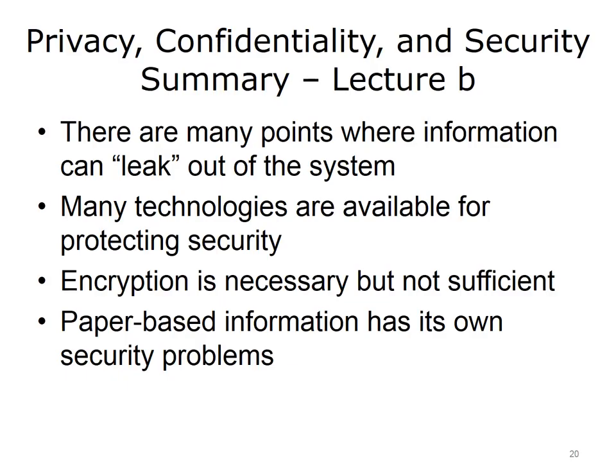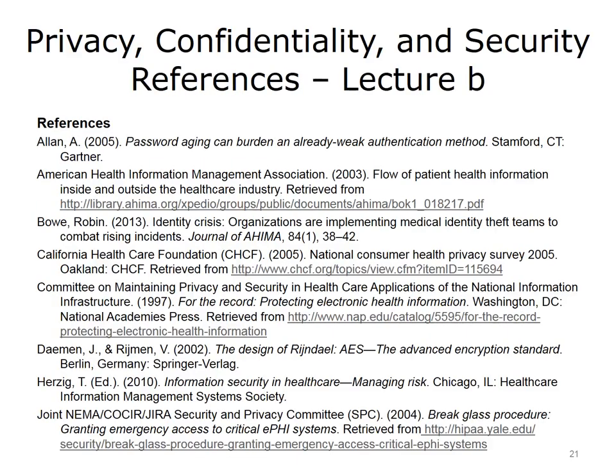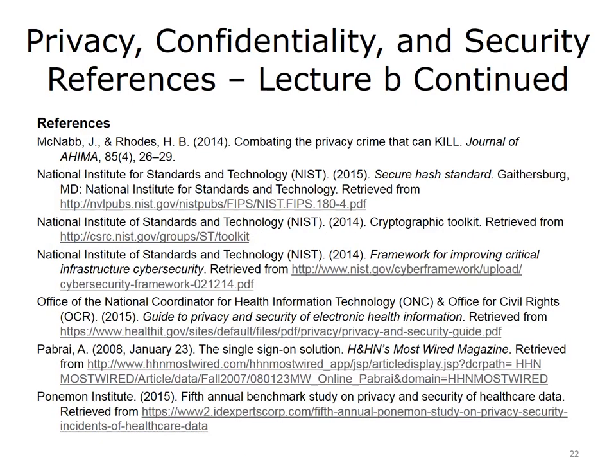This concludes Lecture B of Privacy, Confidentiality, and Security. In summary, there are many points where private patient information can leak out of the health care system. There are also many technologies for protecting security that must be used. One of these, encryption, is necessary but not sufficient by itself. Finally, issues of privacy and security apply to both electronic and paper-based information. Thank you.